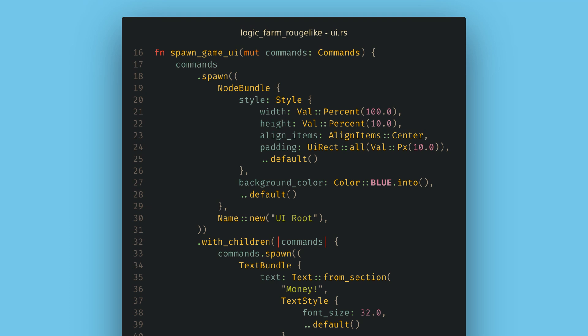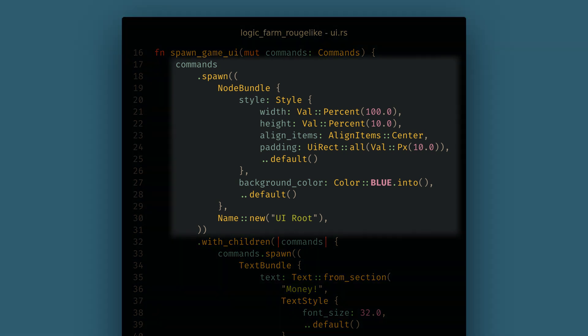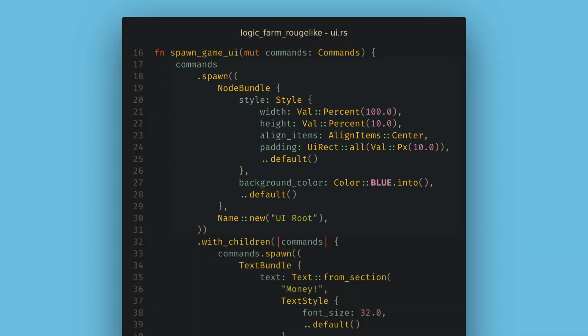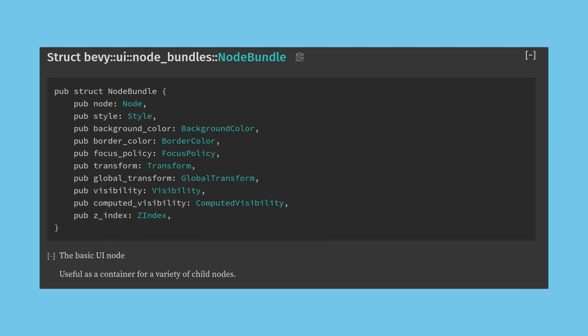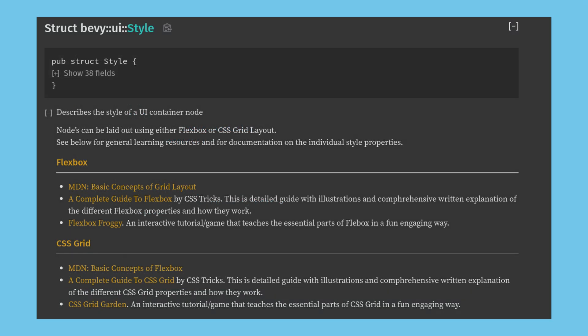The first thing I want to add in my new module is a system to spawn the game UI. Here, I use commands.spawn, but this time I want to spawn a node bundle. The node bundle is the fundamental UI bundle in Bevy, and has many components related to UI. Some of these are set by the engine as it processes the UI, but the main one that we want to edit is the style component.